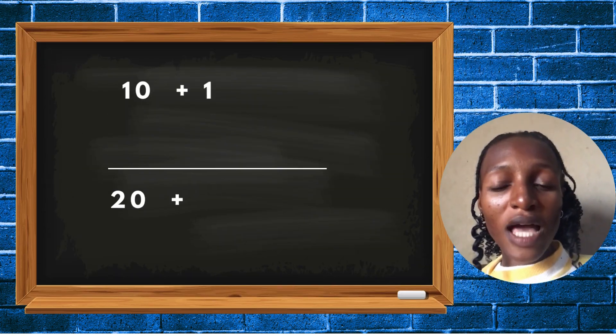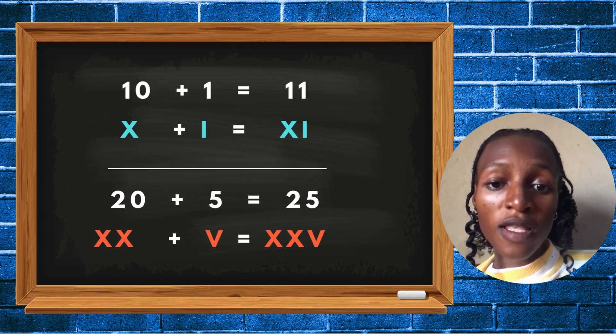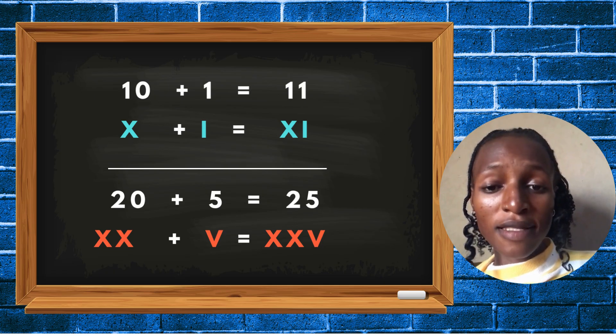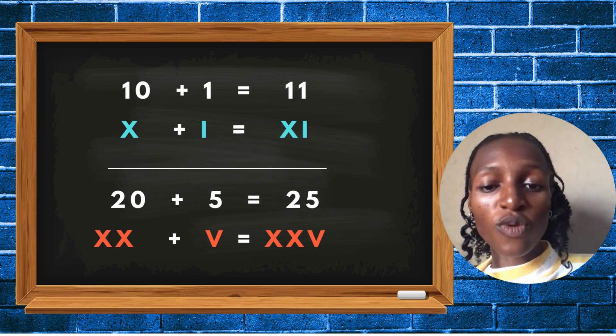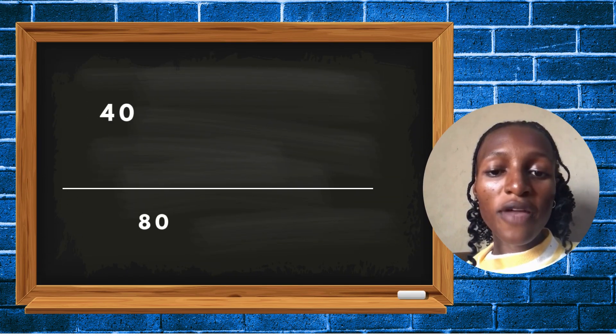Once you've known how to write in Roman figures from one to nine and tens (10, 20, 30, and so on), it will be easy for you to write numbers like 11, which is 10 plus 1, and 25, which is 20 plus 5.